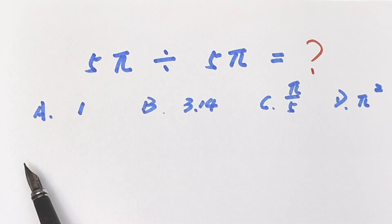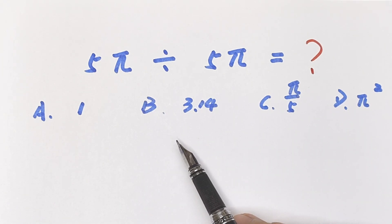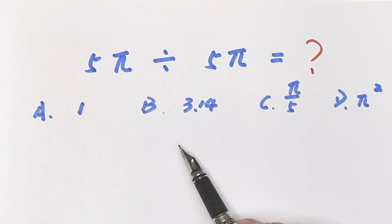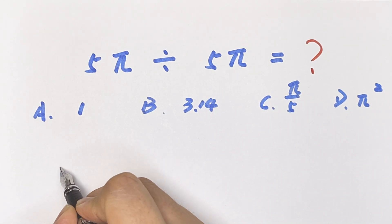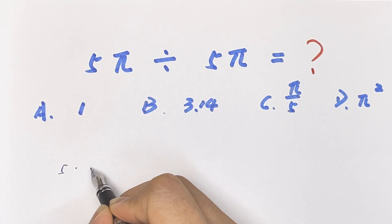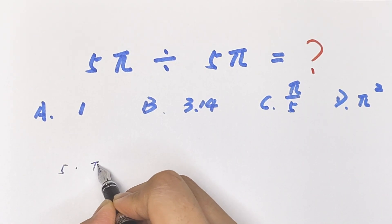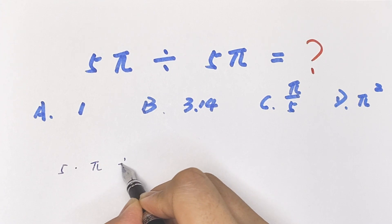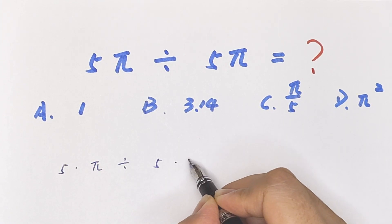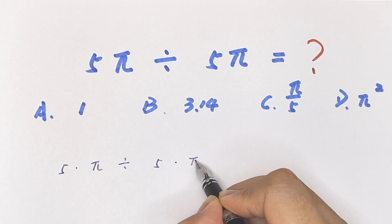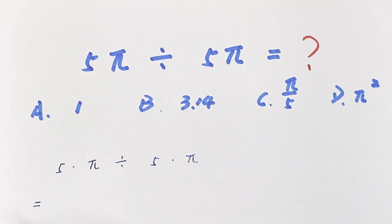a is 1, b is 3.14, c is pi over 5, d is pi squared. 5 times pi divided by 5 times pi is equal to: